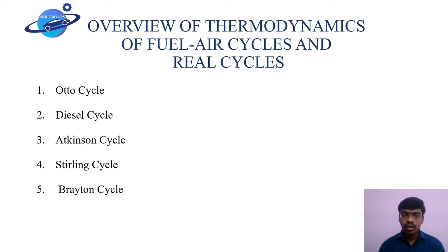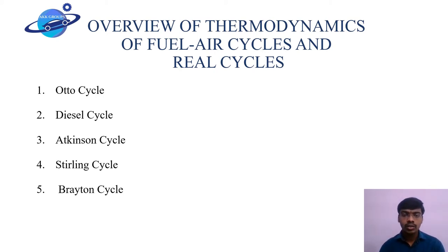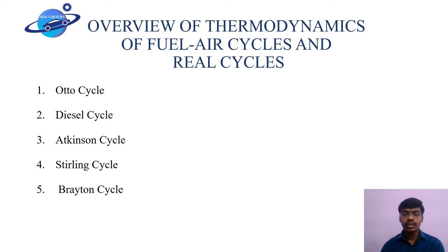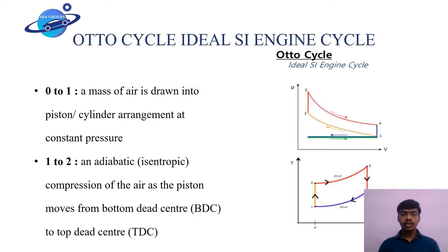These cycles are what all four-stroke and two-stroke designs are based upon. We have five types of thermodynamic cycles: the Otto cycle, the Diesel cycle, the Atkinson cycle, the Stirling cycle, and the Brayton cycle. Let us now look at the first cycle, the Otto cycle, which is generally used in SI engines — petrol engines.